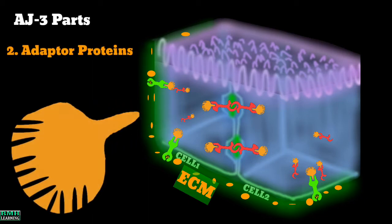Now come to the second part of the anchoring junctions called adapter proteins or anchor proteins. These proteins link the cytoskeletal filaments to the adhesive proteins.